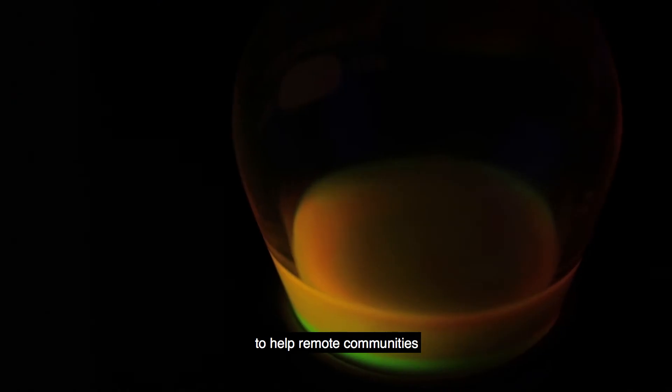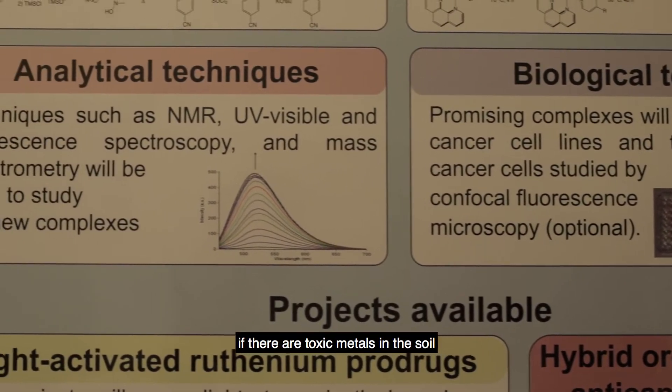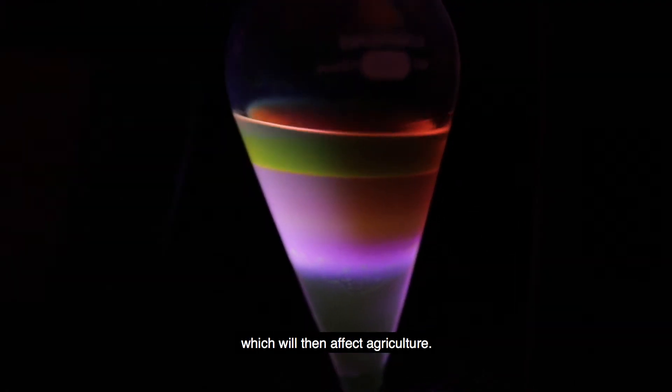One problem that we're currently working on is using our chemical tools to help remote communities measure metal levels in the soil. They need to be able to work out if there are toxic metals in the soil, which will then affect agriculture.